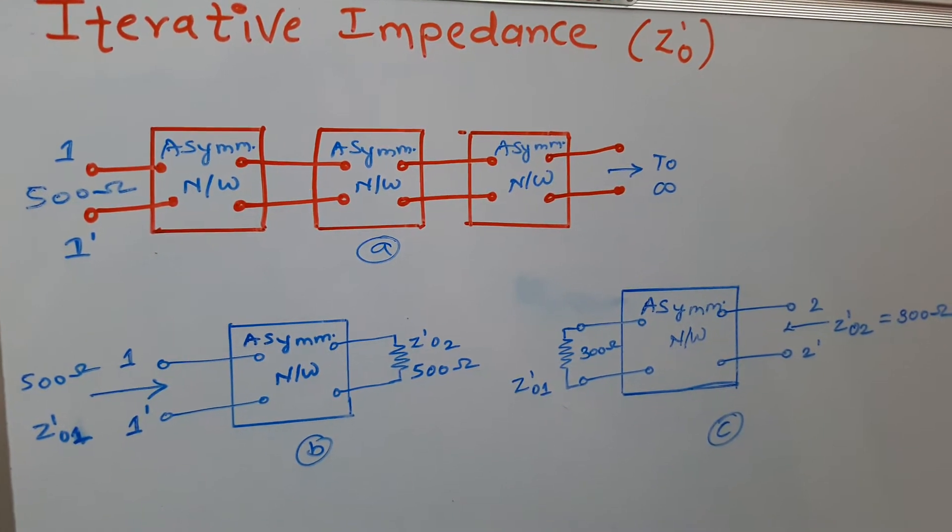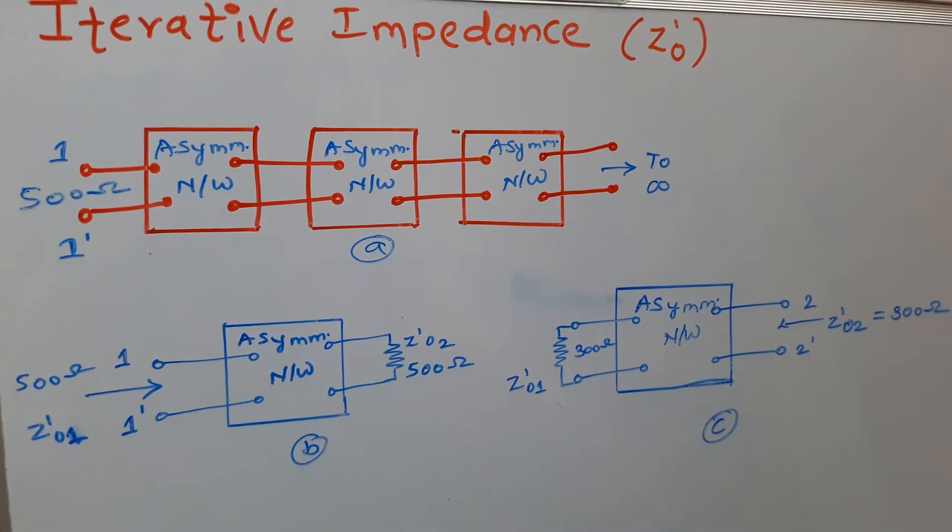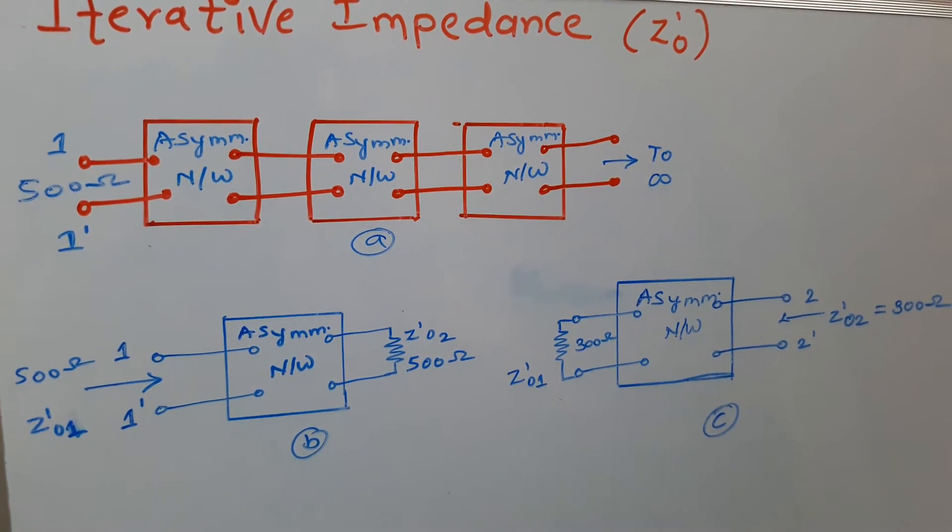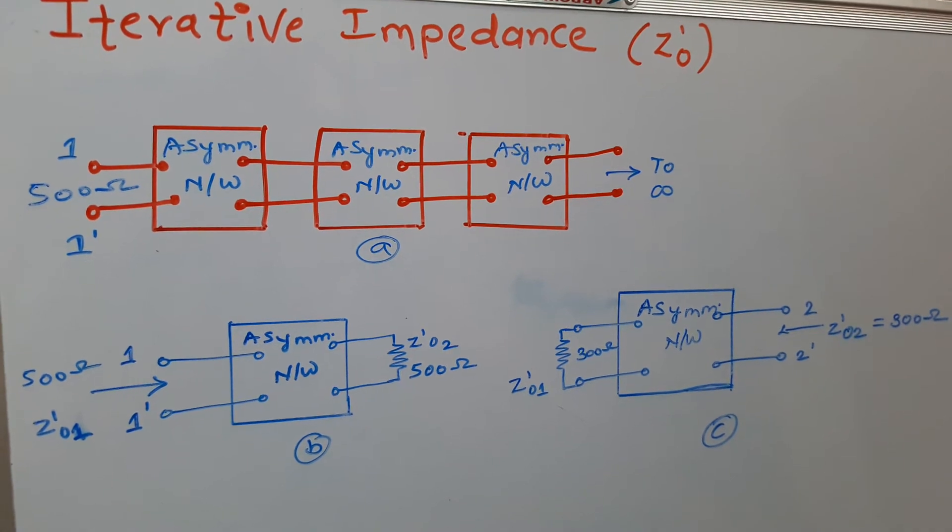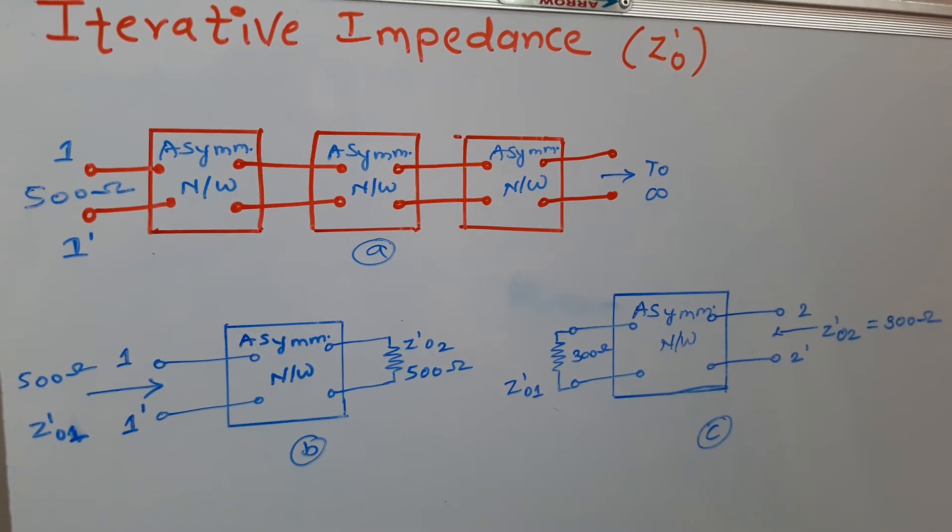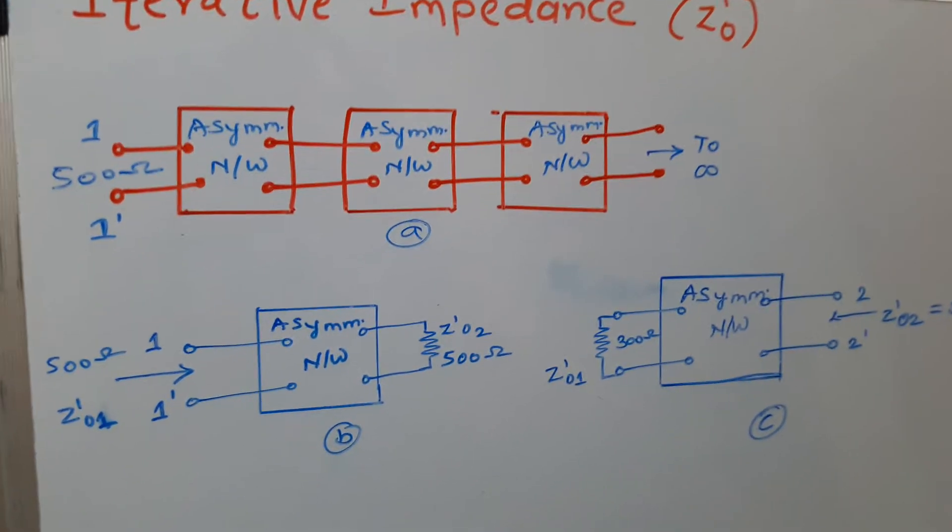Thus, iterative impedance is the value of impedance measured at one pair of terminals when the other pair of terminals is terminated with an impedance of the same value, as shown in figure B and C.